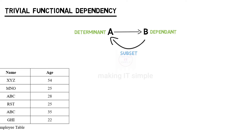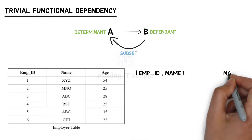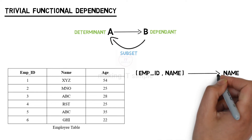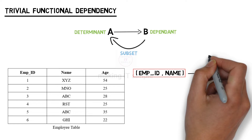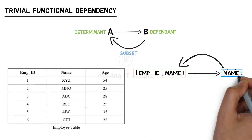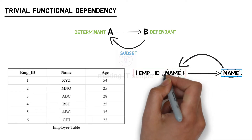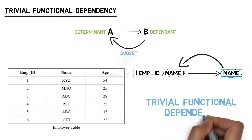Let us consider this employee table. From this table we can write a Functional Dependency: Employee ID and Name determines Name. Is it a valid Functional Dependency? Yes, it is valid — with Employee ID and Name we can determine the Name attribute. However, it is kind of useless because the dependent attribute Name is already a subset of the determinant. We are not getting anything new from it. Such a dependency is a Trivial Functional Dependency.